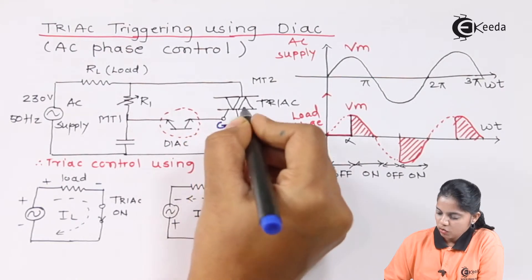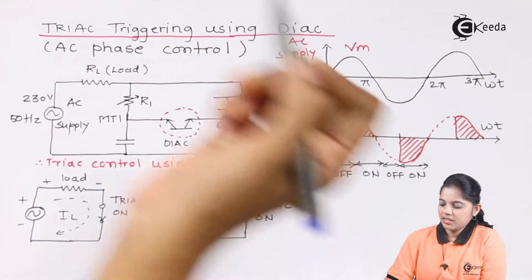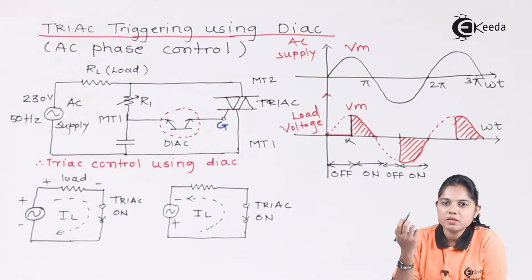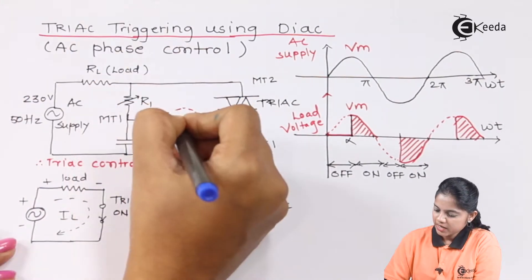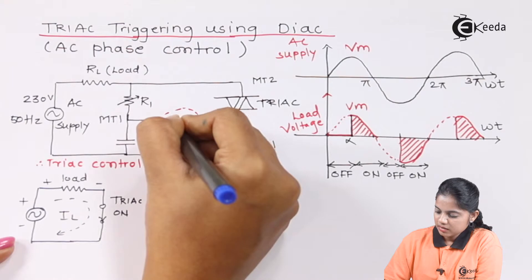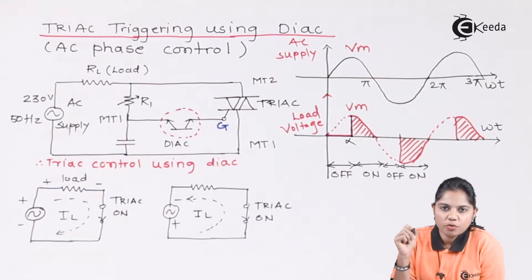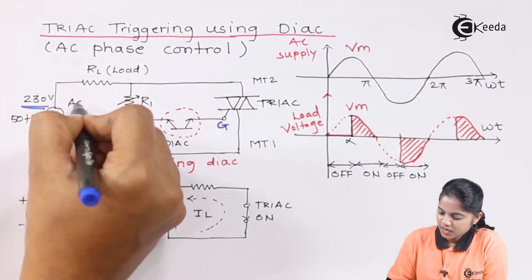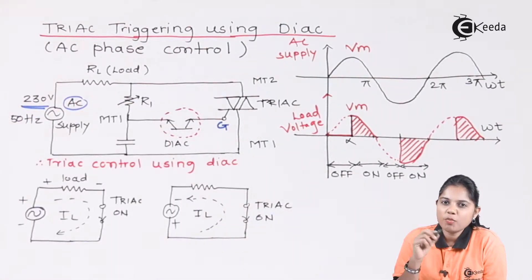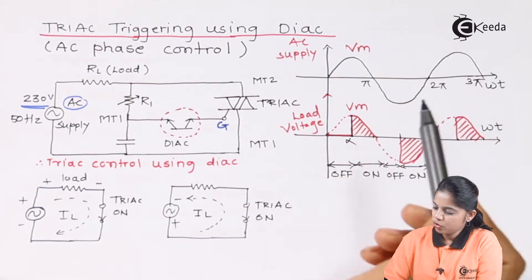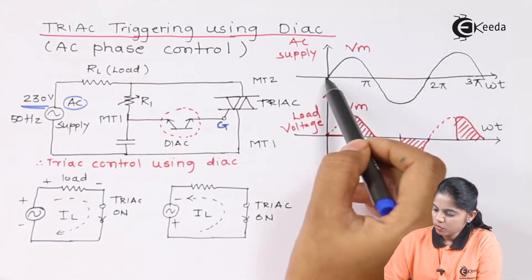A TRIAC works in both the positive half cycle and negative half cycle because it is a bi-directional device. The DIAC has two terminals — the arrows shown represent the conventional current flow. Now since we are using AC supply, we have a positive half cycle and a negative half cycle. We will first see what happens in the positive half cycle and then go for the negative half cycle.